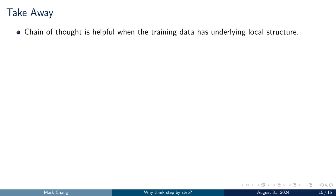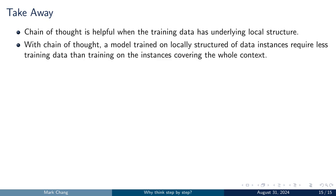Here's what we learned from this paper. First, chain-of-thought reasoning is particularly useful when the training data has an underlying local structure, which is common in many real-world scenarios such as the Wikipedia example we discussed earlier. Second, using the chain-of-thought technique allows us to achieve greater efficiency by training our models on the local structure of instances rather than on the entire context. These are the key insights we gained from this work. Thank you for listening.